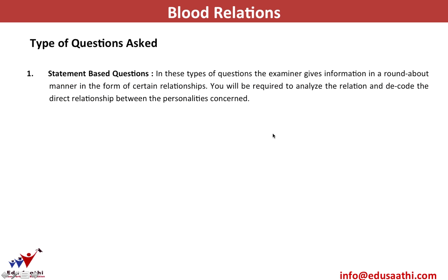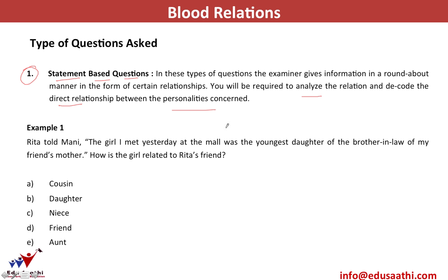Now let's look at the types of questions asked in blood relations. Type 1 is statement-based questions. The examiner gives information in a roundabout manner through certain relationships. You must analyze and decode the direct relationship between the personalities concerned. For example: Rita told Mony, 'The girl I met yesterday at the mall was the youngest daughter of the brother-in-law of my friend's mother.' How is the girl related to Rita's friend?